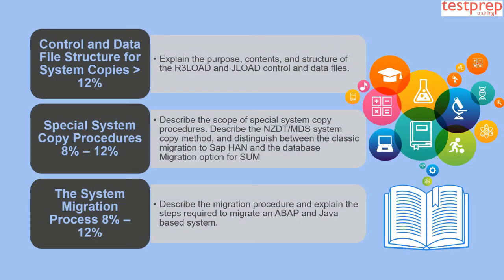Domain 3: Control and Data File Structure for System Copies, comprising more than 12% weightage. This explains the purpose, contents, and structure of the R3load and Jload control and data files. Domain 4: Special System Copy Procedures, comprising 8% to 12% weightage. This describes the scope of special system copy procedures, the NZDT or MDS system copy method, and distinguishes between classic migration to SAP HANA and the Database Migration Option for SUM.